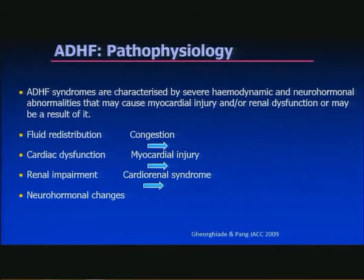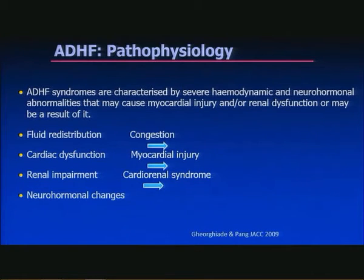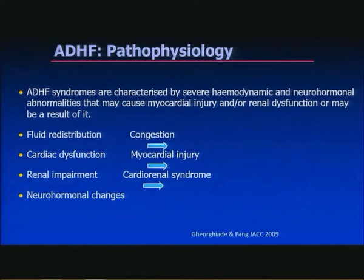Acute decompensated heart failure syndromes are characterized by severe hemodynamic and neurohormonal abnormalities that may cause myocardial injury and/or renal dysfunction, or may be the result of it. Fluid redistribution causes congestion, cardiac dysfunction causes myocardial injury, renal impairment leads to the cardiorenal syndrome, and all of this occurs on a background of neurohormonal changes.